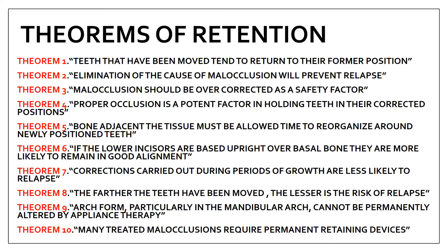The sixth theorem is that if lower incisors are placed upright over the basal bone, they are more likely to remain in good alignment — mandibular incisors should be placed upright or slightly retroclined to maintain proper overjet and overbite.